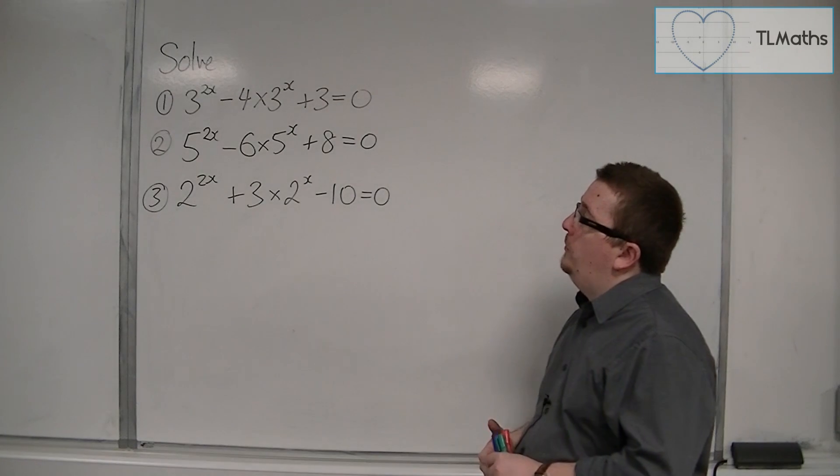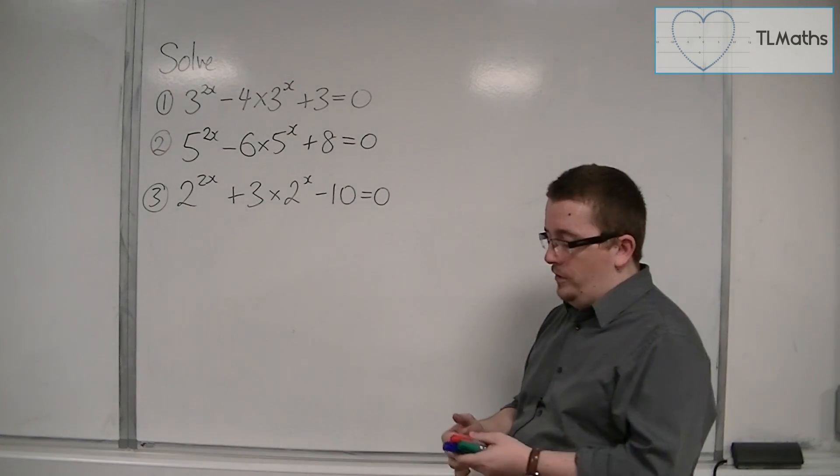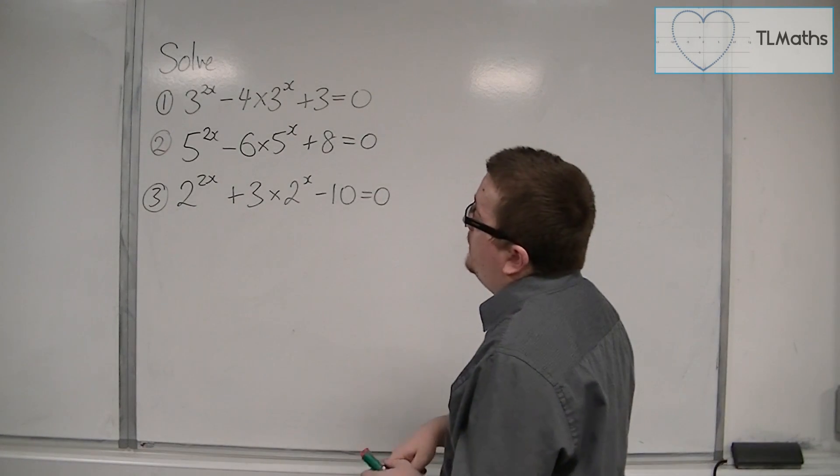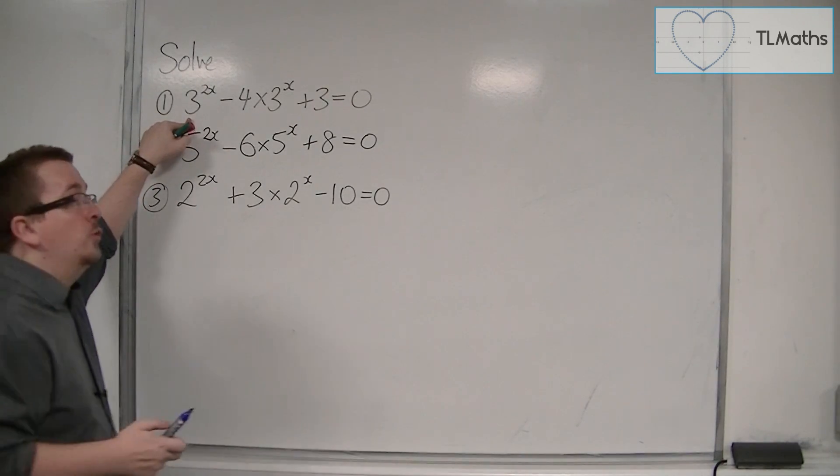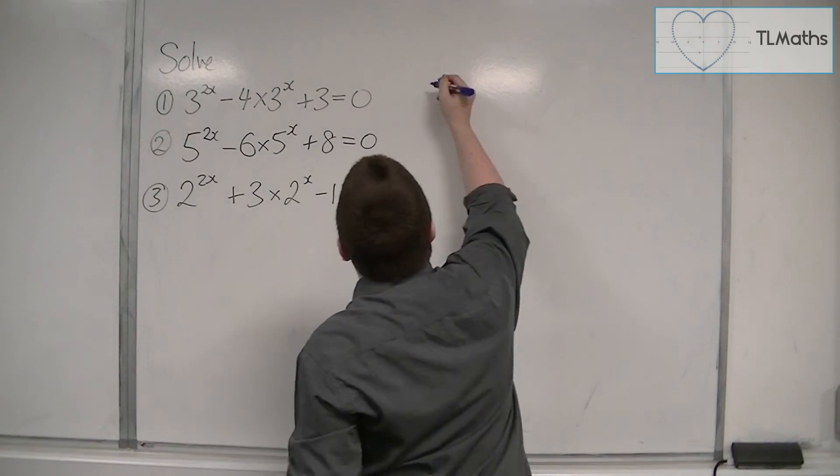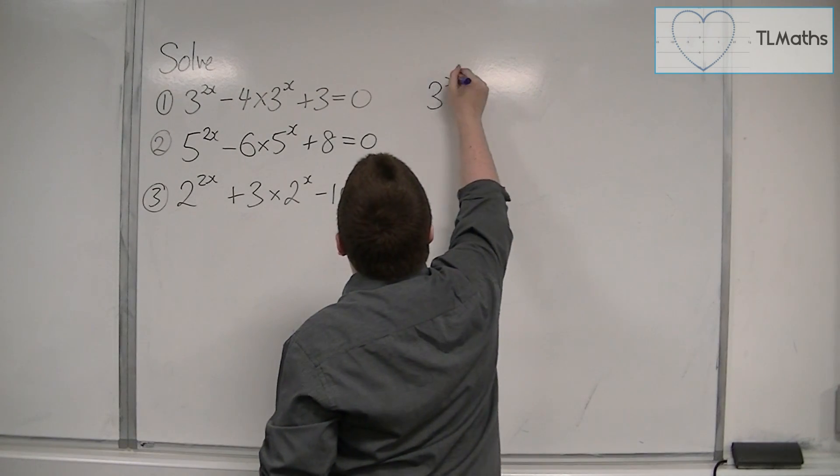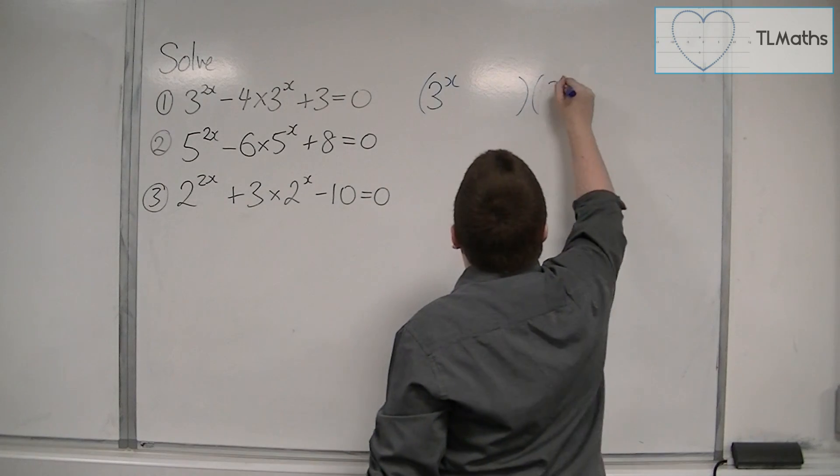Let's start with number one. 3 to the 2x take away 4 times 3 to the x plus 3 is equal to 0. So I'm going to go straight into factorising this. We know that 3 to the 2x can be written as 3 to the x all squared.